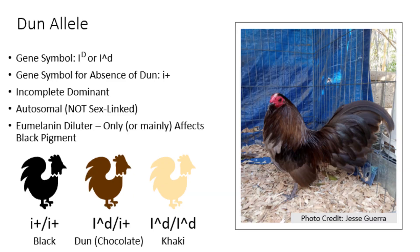The Dunn gene, denoted by the gene symbol capital I with a capital D in the superscript, is an incompletely dominant autosomal gene. The gene symbol for the absence of Dunn is a lowercase i with a plus sign afterwards to represent that it is the wild type. For those of you familiar with the blue gene, it may help to know that the Dunn gene works just like it — it is also a eumelanin diluter, meaning it dilutes black pigment but leaves phaeomelanin or red pigment largely unaffected.